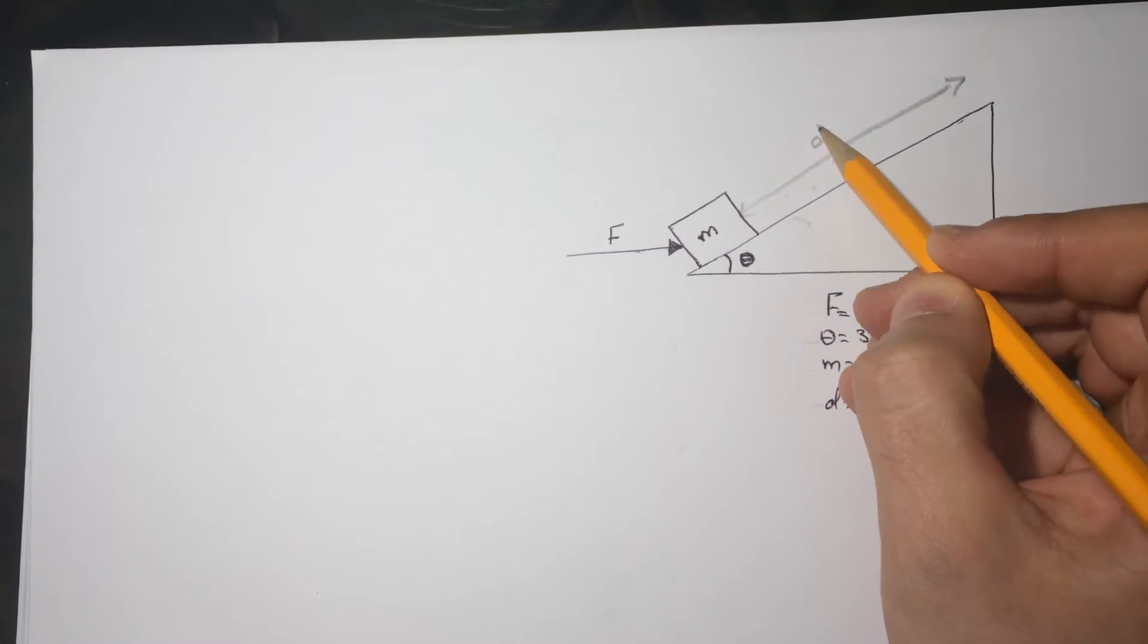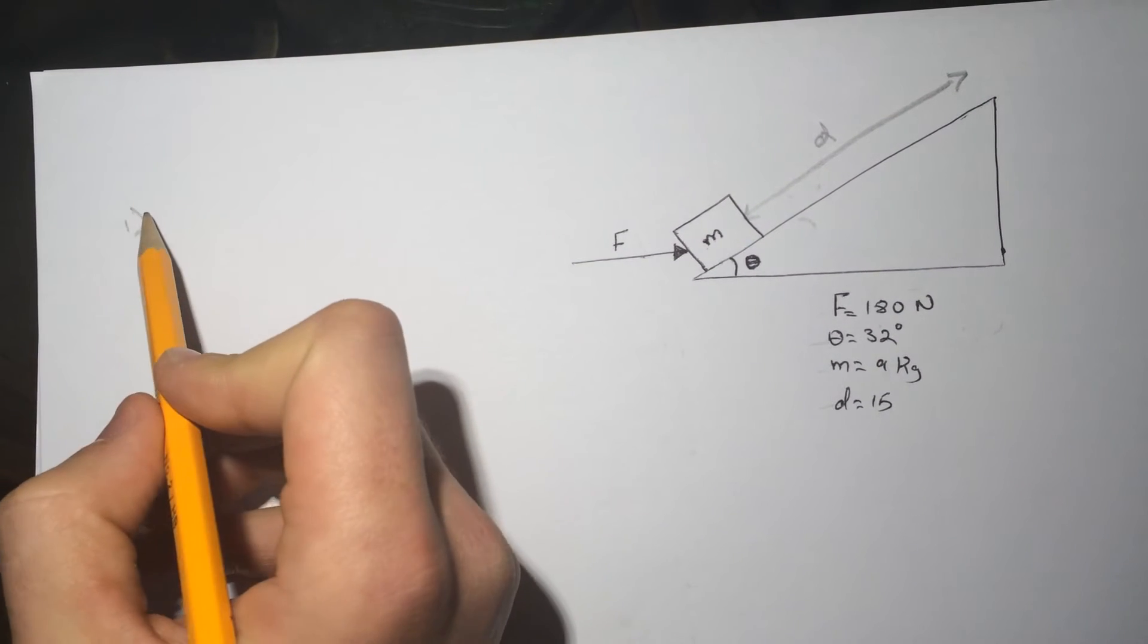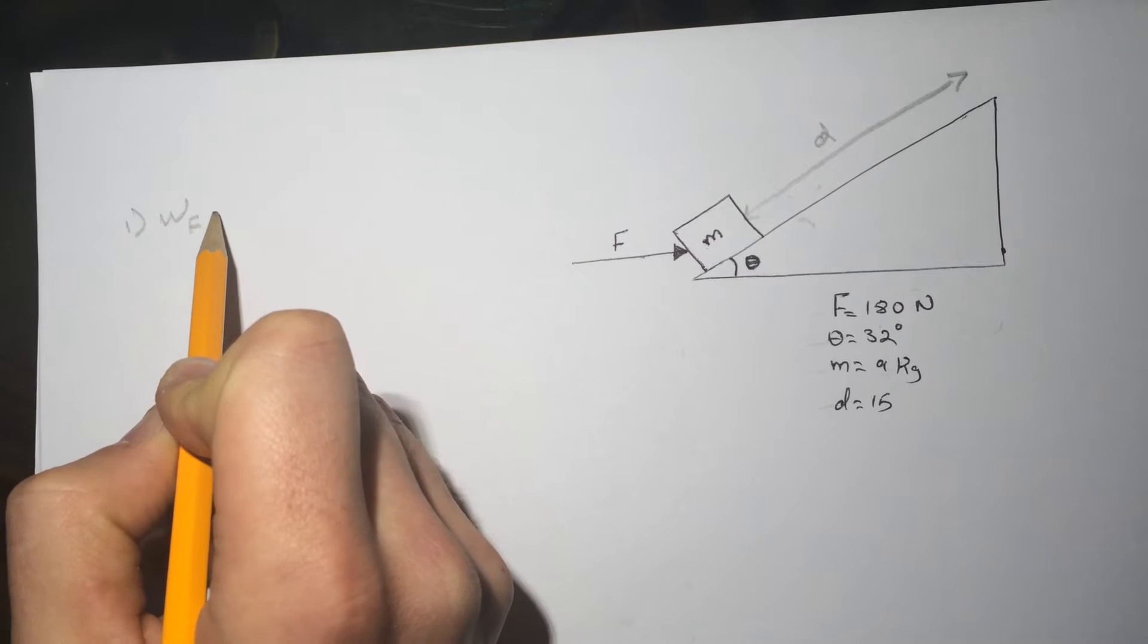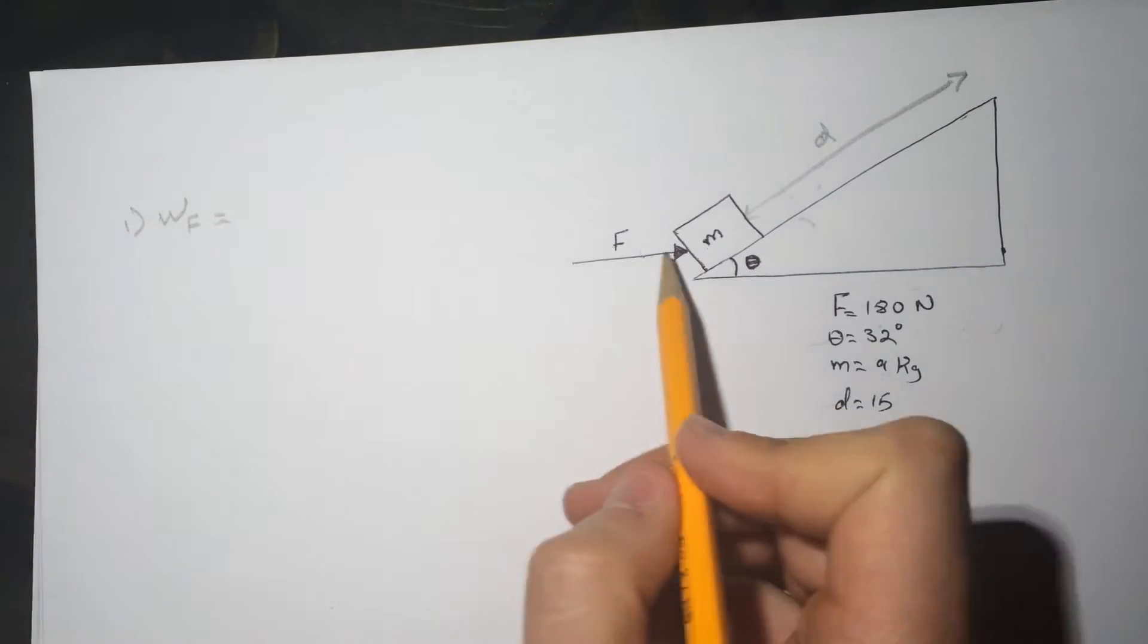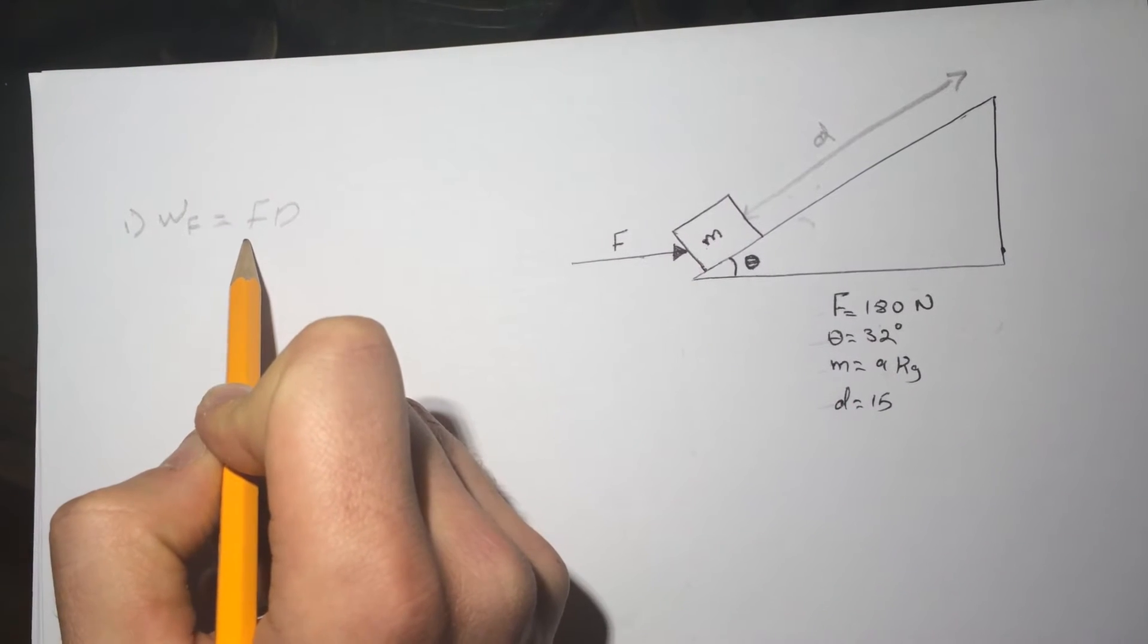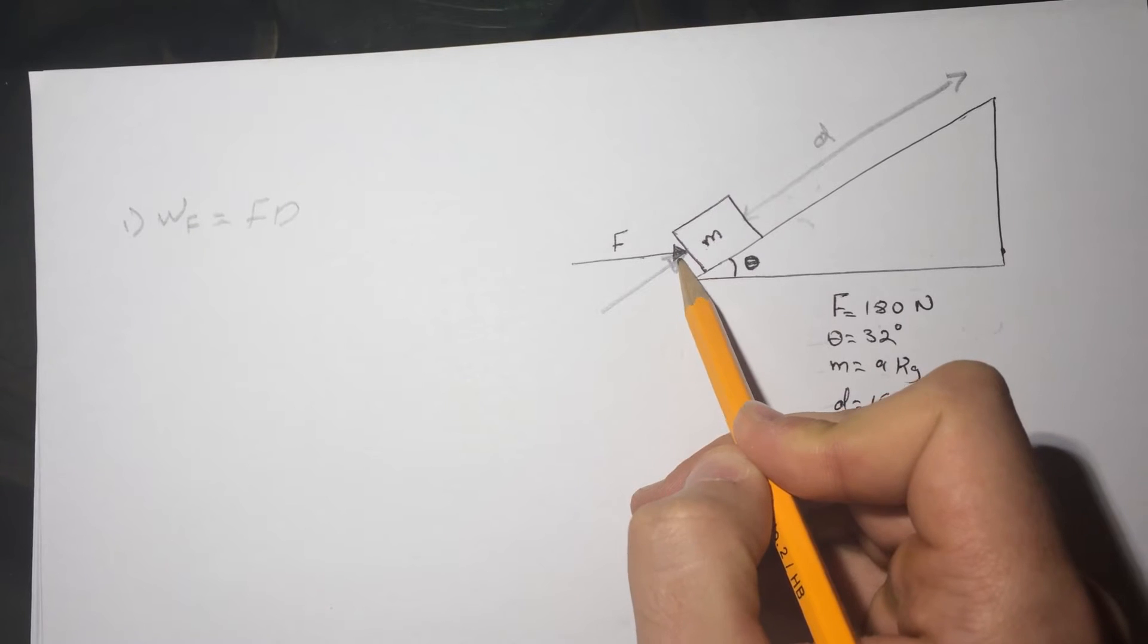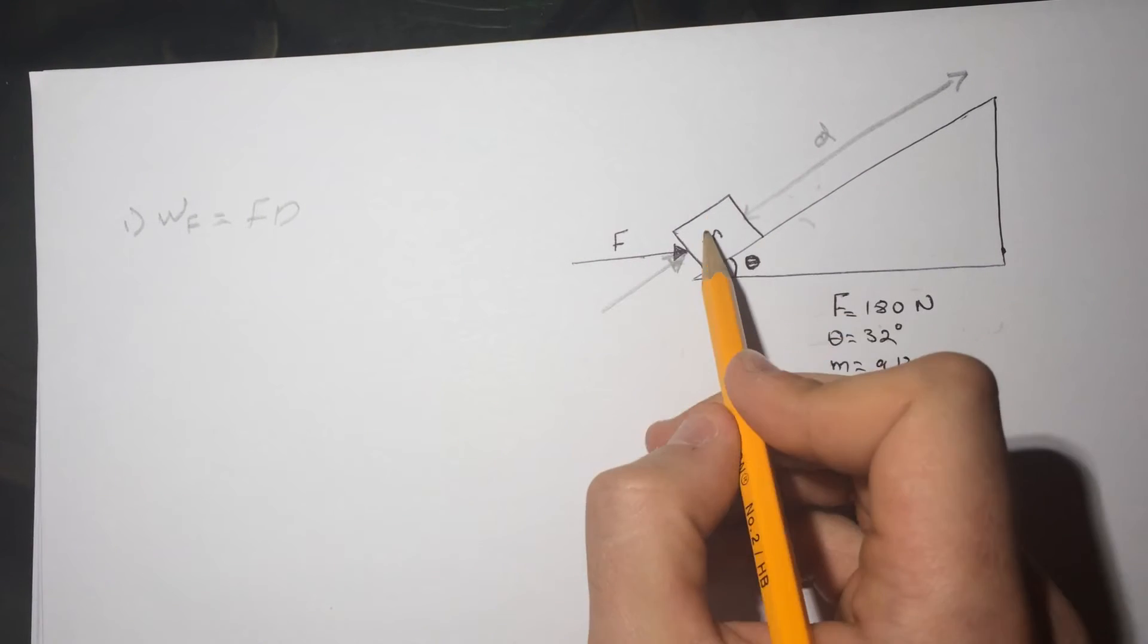This D is from here to here. So the first question is asking how much work is done by the force on the box. Let's call this WF and the force, if you look at it here, it's just force times distance. But the force here should be like this, this is the force we're looking at.